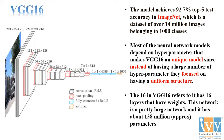Instead of dealing with a large number of hyperparameters, VGG16 focuses on having a uniform structure, which makes it very unique. An input image of 224×224×3 (the 3 RGB channels) is passed through 64 kernels. After each pooling layer, the image size is halved while the number of kernels doubles — going from 224 to 112, to 56, to 28, to 14, and finally to 7×7×512.